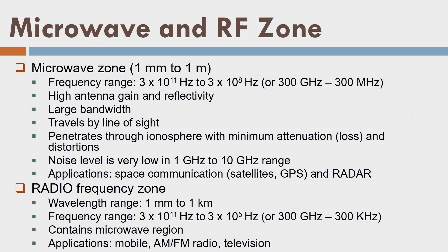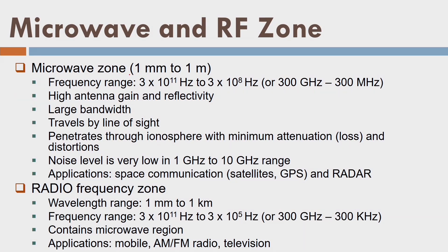We are using the term 'radio detection and ranging' while using the microwave region — so what is the difference between the two? The microwave wavelength range is from 1 millimeter to 1 meter on the electromagnetic spectrum. Converting 1 mm to frequency (assuming speed of light as 3×10⁸ m/s), 1 mm corresponds to 3×10¹¹ Hz and 1 meter corresponds to 3×10⁸ Hz, or 300 MHz to 300 GHz — that is the microwave zone. The microwave zone has high antenna gain.